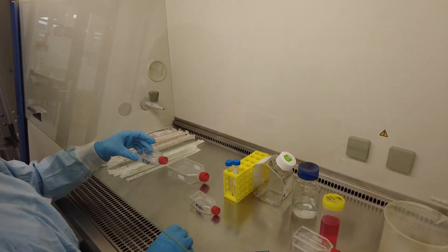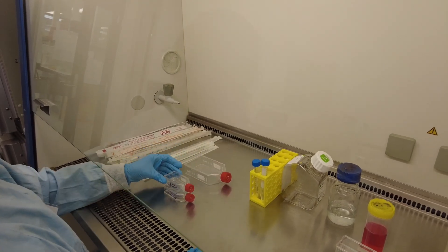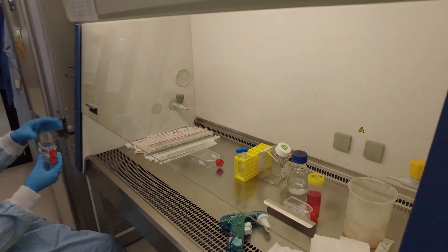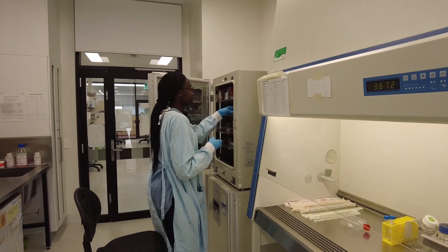Make sure that the trypsin covers the bottom layer of the flask. We're going to put it into the incubator for about 5-10 minutes. And then we'll be back so we can split the cells.